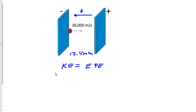So then we know that kinetic energy is one-half mass times velocity squared. So one-half the mass of a proton, 1.67 times 10 to the minus 27, and multiply it by 36,000 squared.